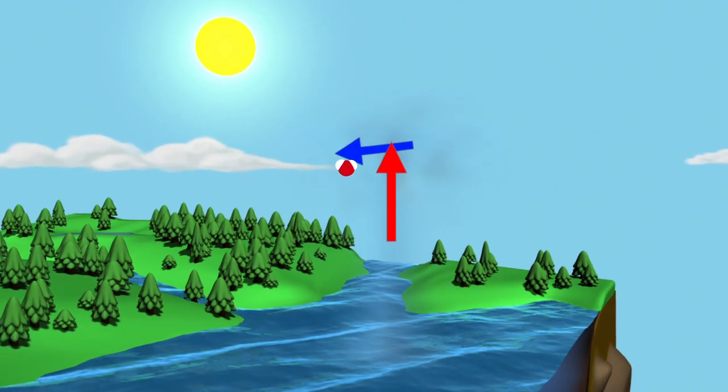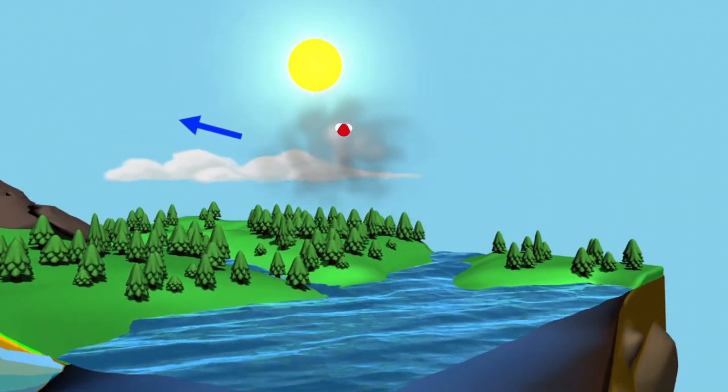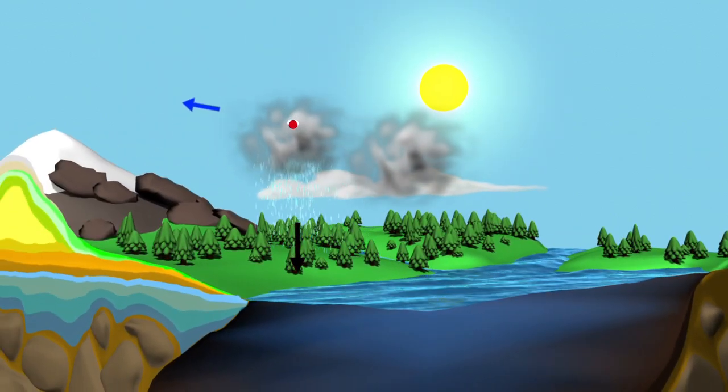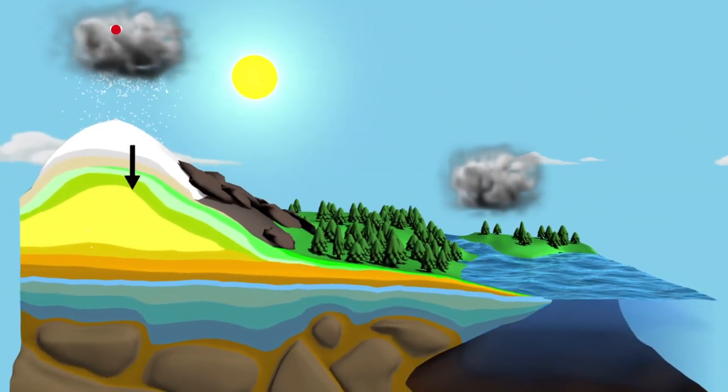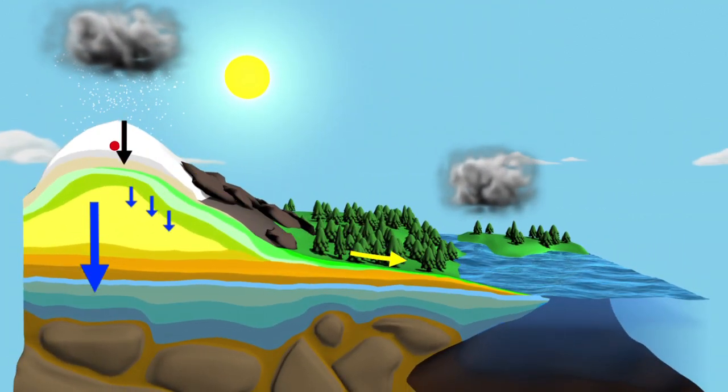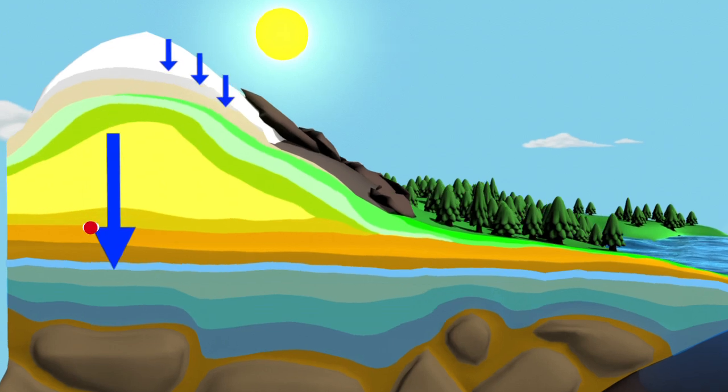Water on the ocean surface evaporates, can travel as clouds or vapor over land, fall as rain or snow, and then work its way back to the ocean through rivers, surface runoff, or as icebergs.